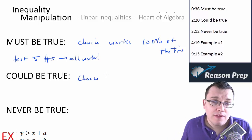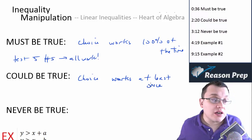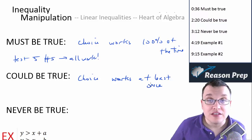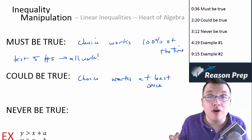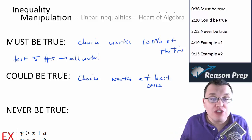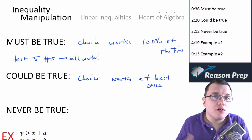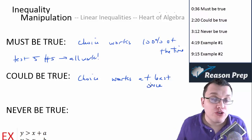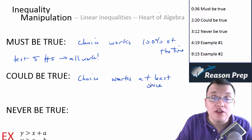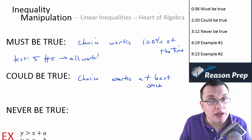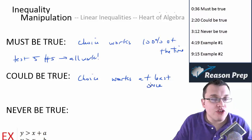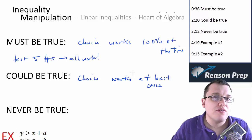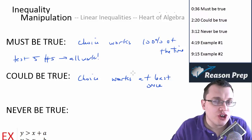Could be true means the choice works at least once. If you plugged in a thousand numbers and it never worked, that doesn't prove it could never be true — because if you find even one point out of the infinite number of points that works, that choice could be true. So you need to do a little manipulation, move some stuff around, and see if you can prove it could be true. Combining plugging in with manipulating the inequalities is the ticket to really securing the answer.